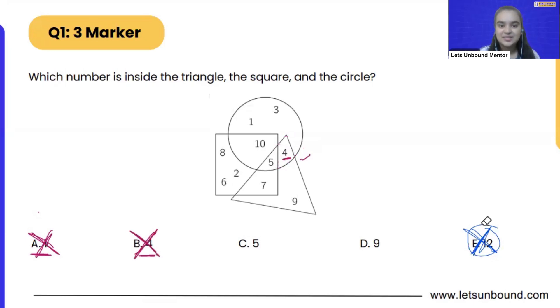Let's see option number C. Now number 5, where is number 5? Here we go, number 5. Now if you will see number 5 is inside triangle, inside square and inside circle. It is enclosed between all these three shapes. We are having the side of triangle, square and then the circle as well. So can we say that option C is correct?